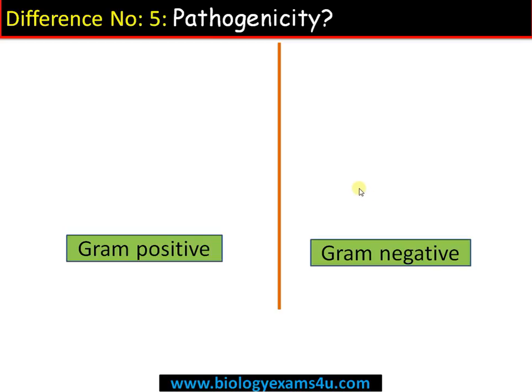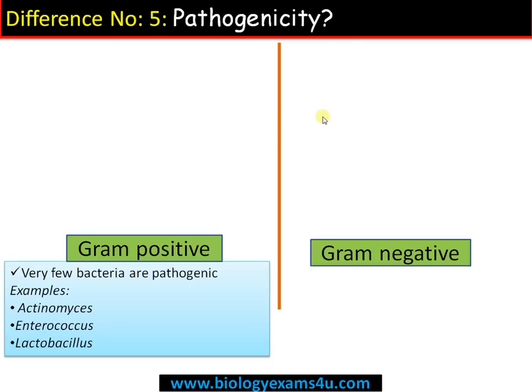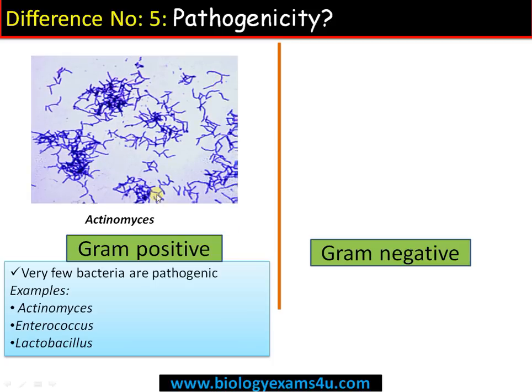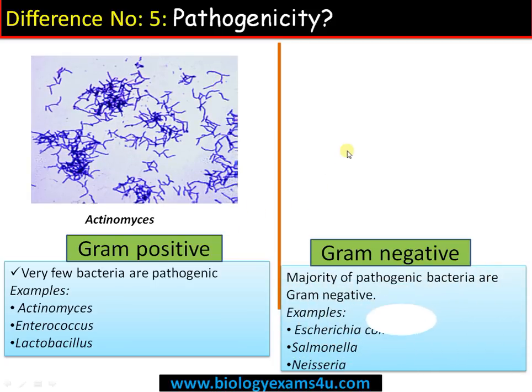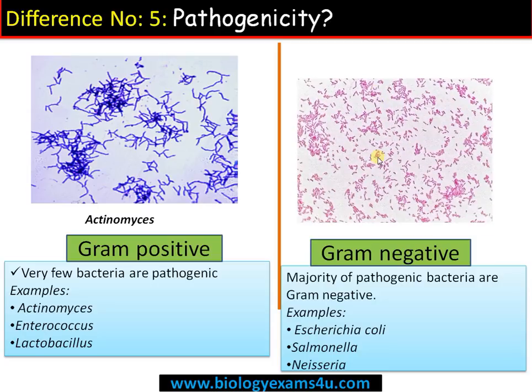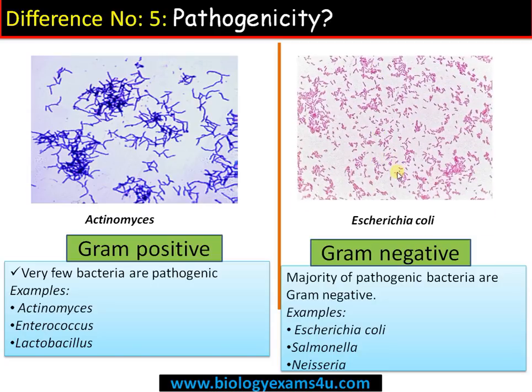Difference number five is regarding pathogenicity. Very few gram-positive bacteria are pathogenic; examples include Actinomyces, Streptococcus, etc. Whereas gram-negative bacteria, the majority are pathogenic, as there is an outer wall which is highly protective and gram-negative bacteria are often highly infectious — examples include Salmonella, Neisseria, E. coli, etc. Thank you so much for your support, and you are with biology exams for you dot com.